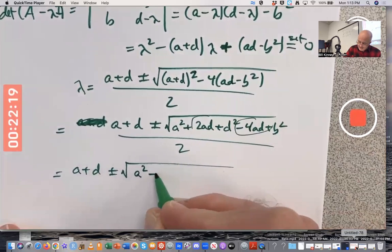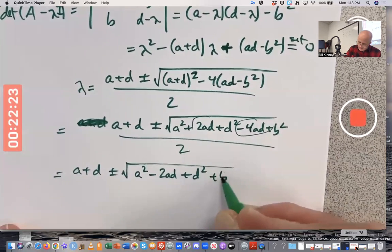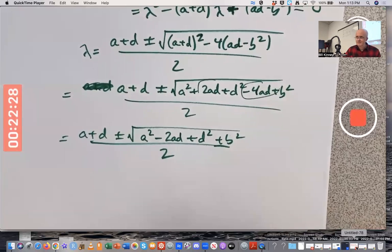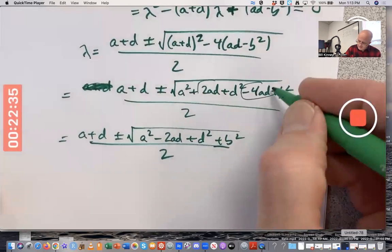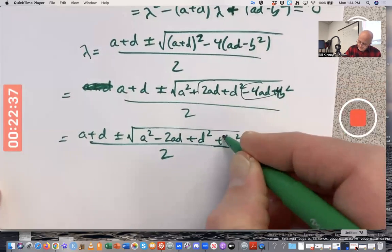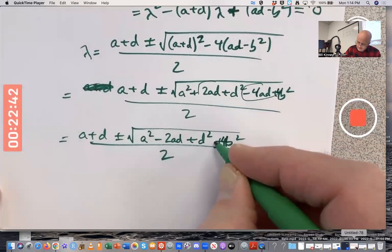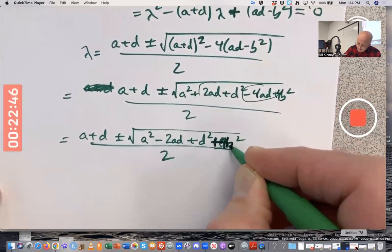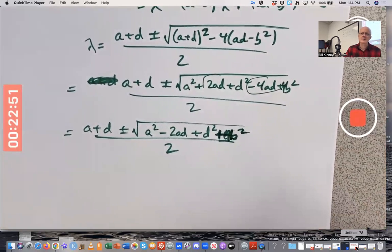And this does simplify a little bit because you can combine these two terms. Let's write A squared minus 2AD plus D squared plus B squared. I claim there's something nice about that expression under the square root. What's nice about it? 4B squared. It's a plus 4B squared. Thank you.